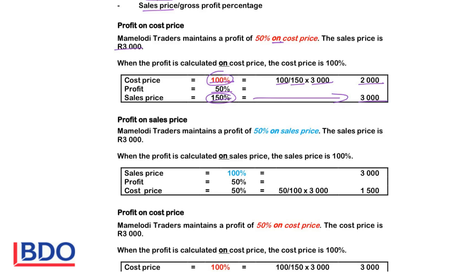In the second example, the profit is 50% on sales price. The cost price must be less, so we have to deduct, and then the cost price is 50%. If we want to calculate the cost price, we will write the cost price — 50% — at the bottom, divided by the percentage known — 100 — times 3000, and that will give me 1500. So in this case, I take 3000 times 50, divided by 100.